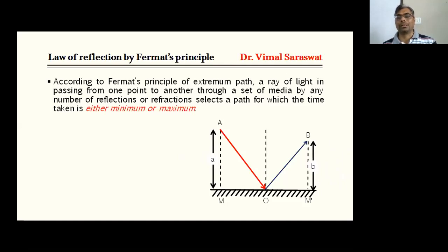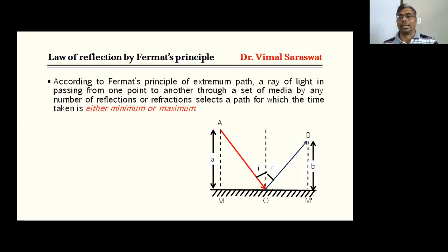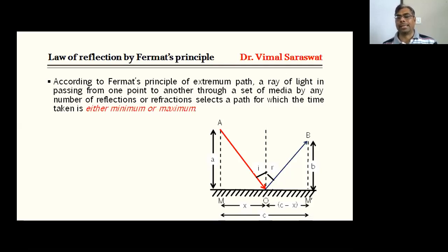This is our normal. I is our angle of incidence — the angle which is made by the incident ray with the normal. Similarly, R is the angle of reflection — the angle which is made by the reflected ray with the normal. Let MO equal x and MM' equal c, so OM' will be c minus x.